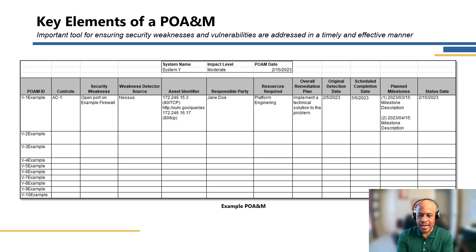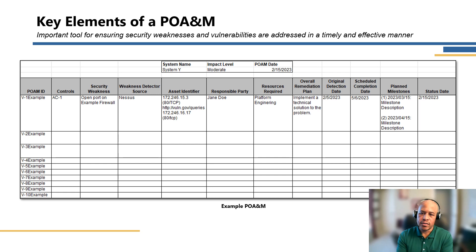Finally, status updates: the POAM should be reviewed at a defined frequency depending on the organization — it could be monthly or quarterly. Typically we've seen monthly works well, where you get the relevant stakeholders together to talk through remediation efforts, any closures or updates to POAMs, to ensure the POAM remains up-to-date and accurately reflects the current security posture of the system.